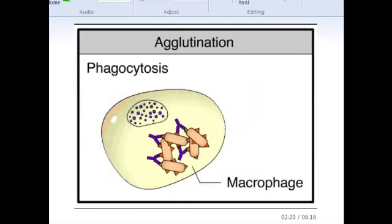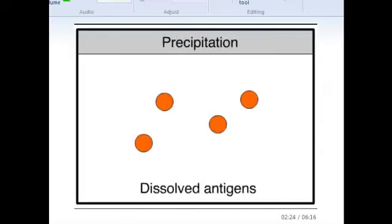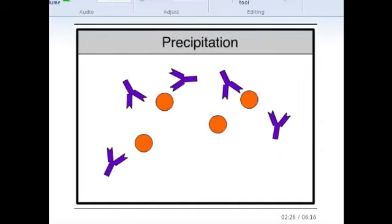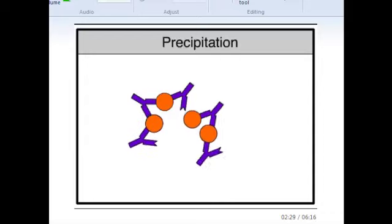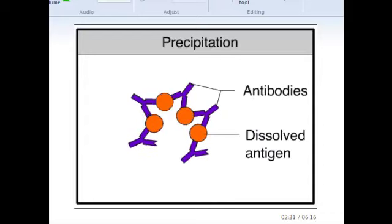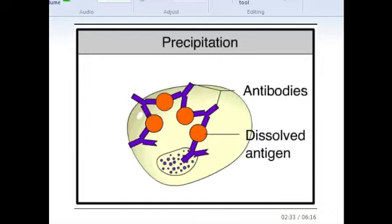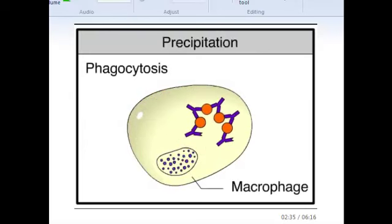Precipitation is similar to agglutination, except this process clumps together free antigen molecules dissolved in body fluids. This inactivates them and attracts macrophages, which destroy them by phagocytosis.